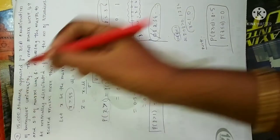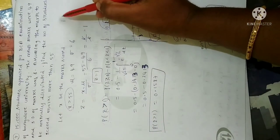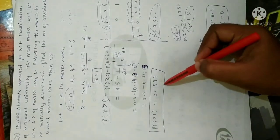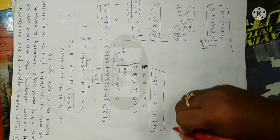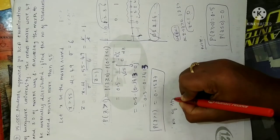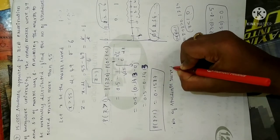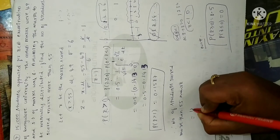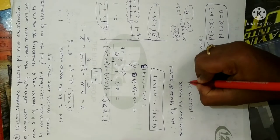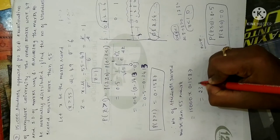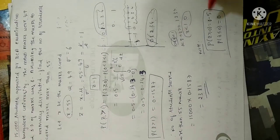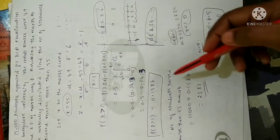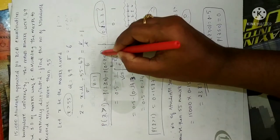For 15,000 students total, number of students who scored more than 55 equals 15,000 multiplied by 0.1587, which gives 2381. Remember: given an x value, convert it to z, then use the formula. These standard values (probability of z ≥ 0 = 0.5, probability of z ≤ 0 = 0) are a new concept you need to memorize.